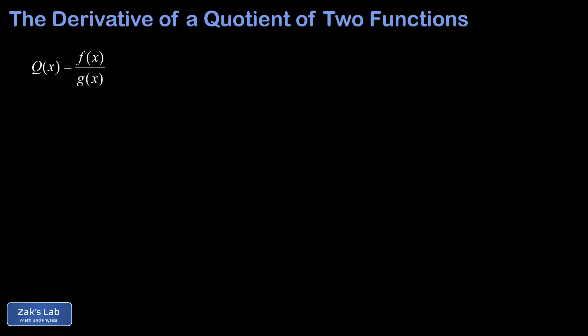In this video, we continue to develop our algebra of differentiation by finding out what happens if we take the derivative of a quotient of two functions. I gave this thing a name, capital Q for quotient, and it's defined as f of x over g of x. The whole goal here is to figure out if we can write the derivative of this thing in terms of the derivatives of the individual functions f and g.